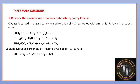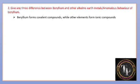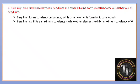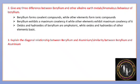Give the differences between beryllium and other alkaline earth metals — same as anomalous behavior of beryllium. Beryllium forms covalent compounds while other alkaline earth elements form ionic compounds. Beryllium exhibits a maximum covalency of 4, while other elements exhibit maximum covalency of 6. Oxides and hydroxides of beryllium are amphoteric, while oxides and hydroxides of other alkaline earth metals are basic.